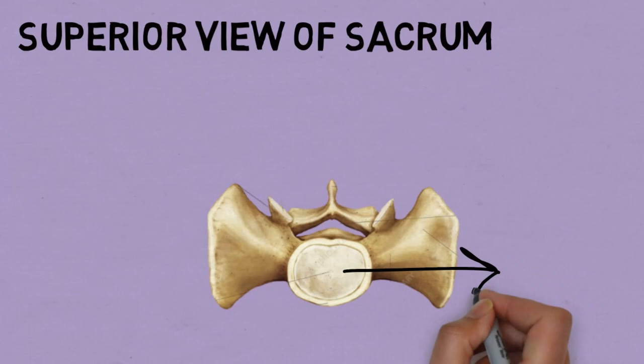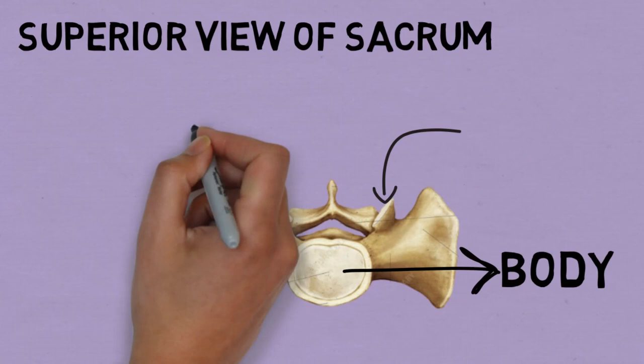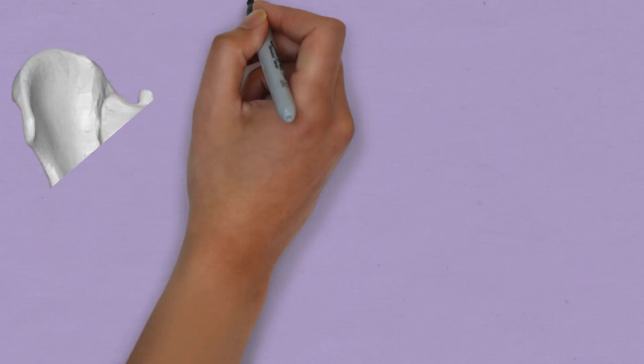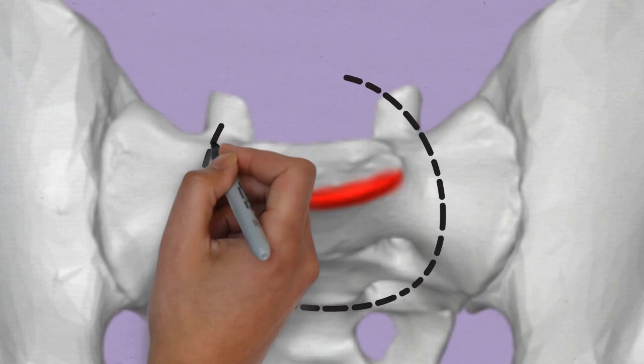This is the upper massive part of the sacrum — the body — and these are the superior articular processes on each side. Now let's see the promontory separately. This is the sacrum articulated with the hip bones, and this projecting margin which you can see is the promontory.